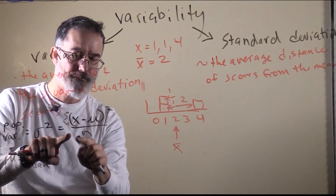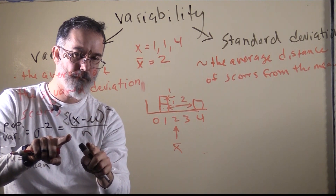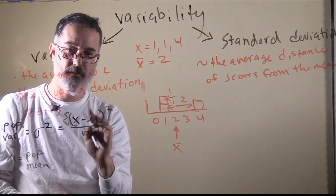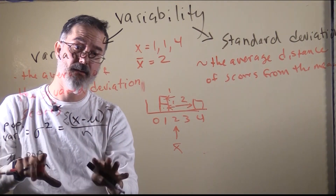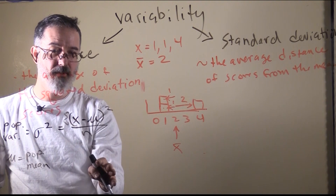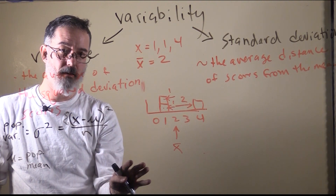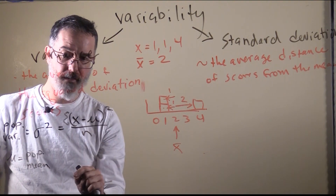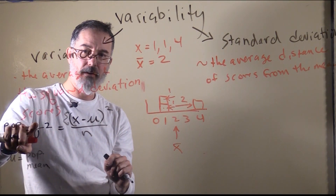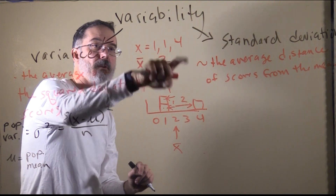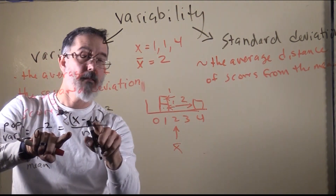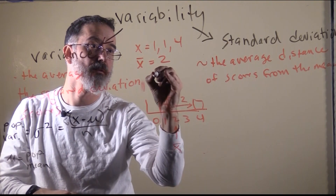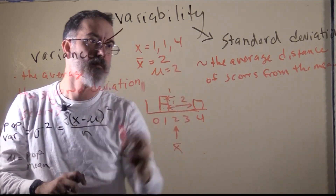This formula is going to be used over and over in this class, so it is really good to get good practice with it and become proficient with it, because it is not going away. Usually we will do the sample version, which we will talk about in a second. But let us calculate the variance of a population with scores 1, 1, and 4. The mean, whether it is a sample or a population, the formula is the same — so the mean will be 2.